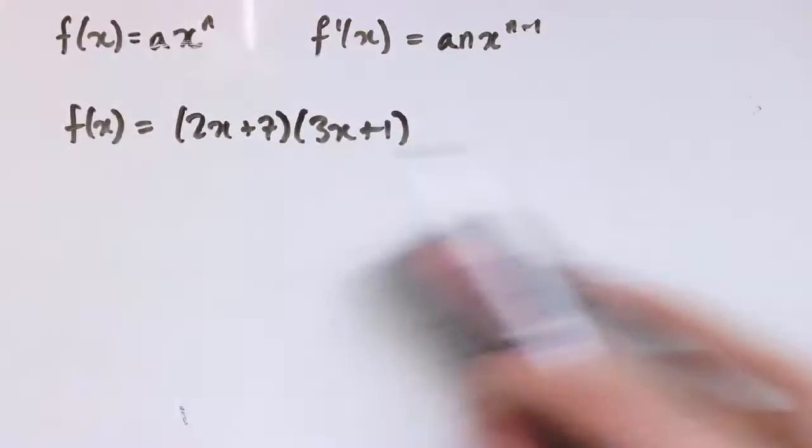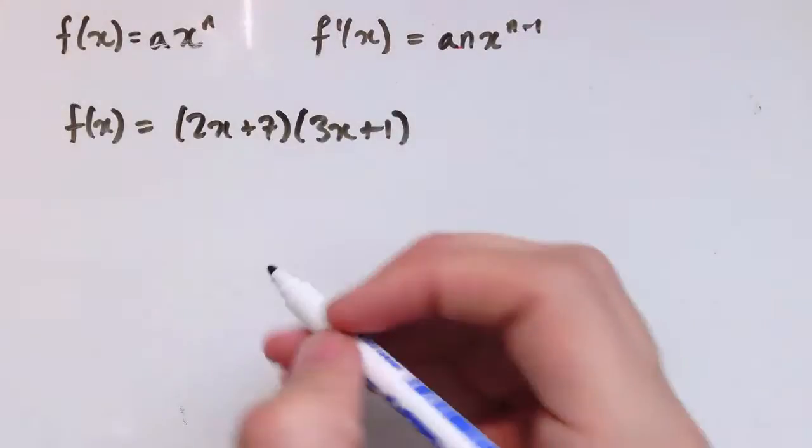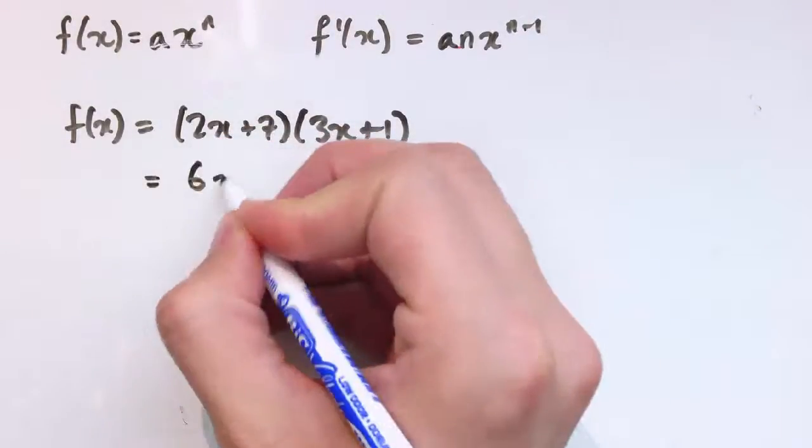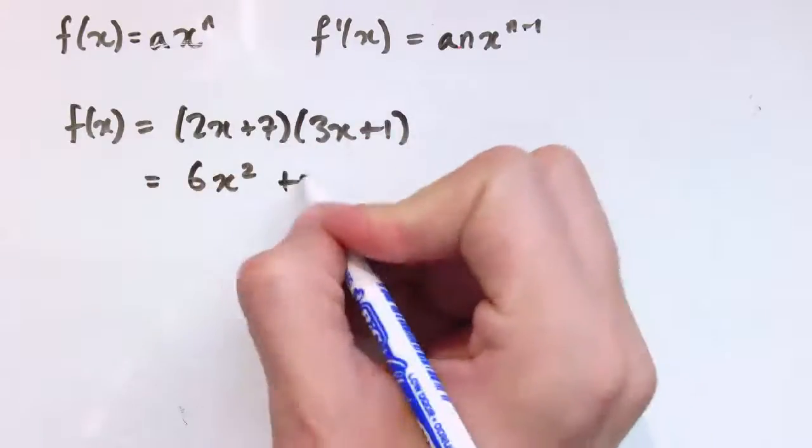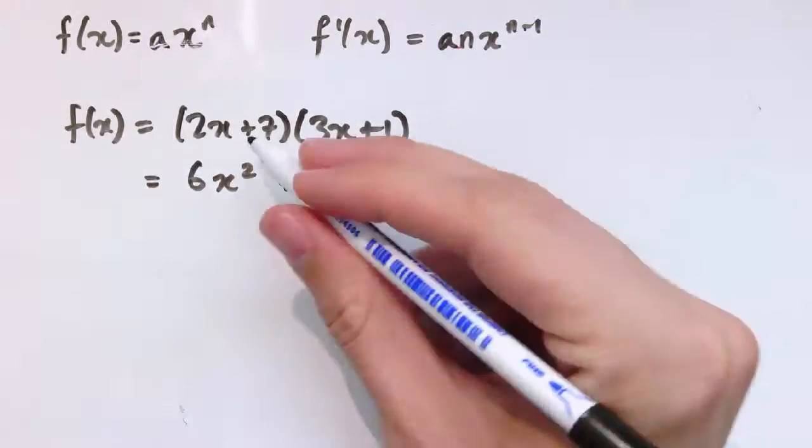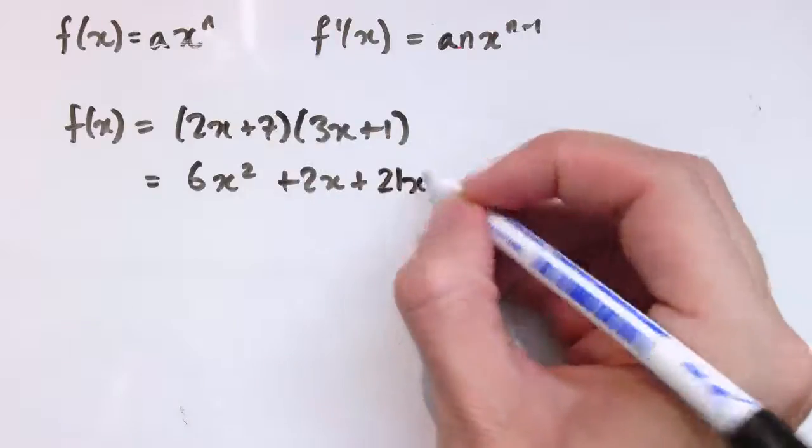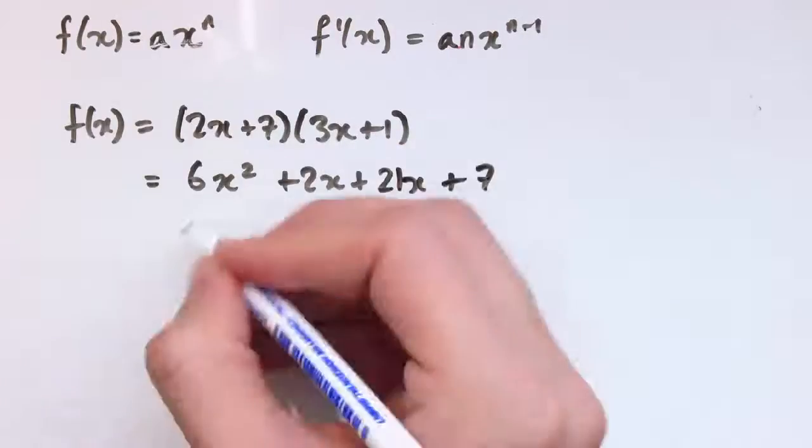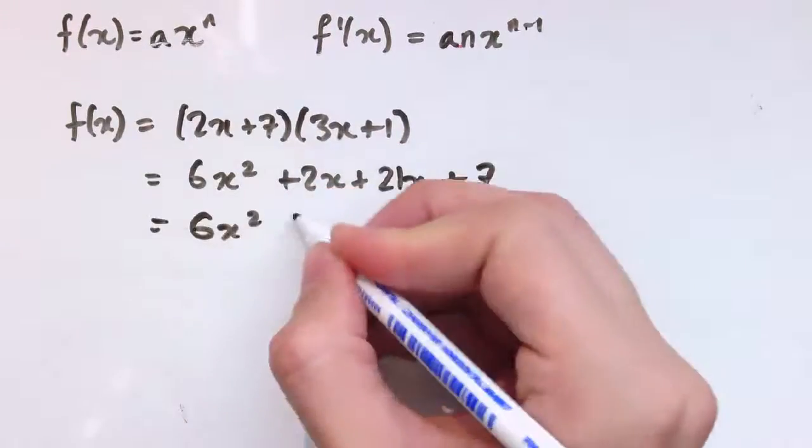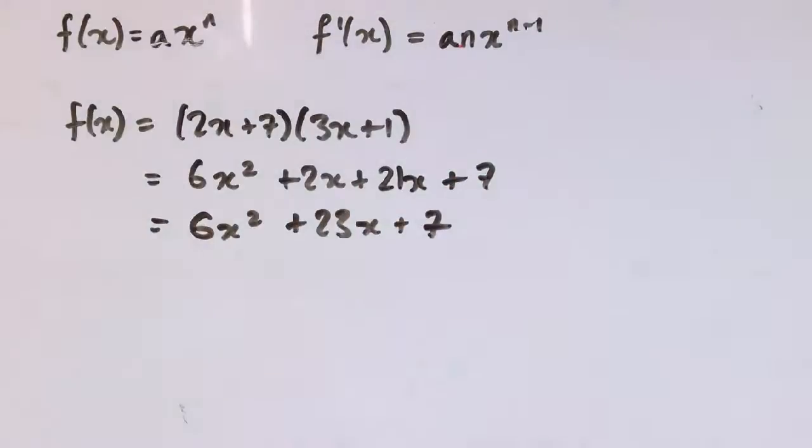So what we need to do for something like this is to multiply out the brackets, and we'll get 2x times 3x is 6x squared plus 2x plus 7 times 3x is 21x plus 1 times 7 is 7. So we've got 6x squared plus 23x plus 7.